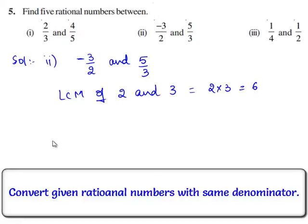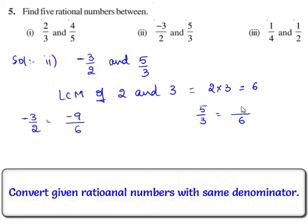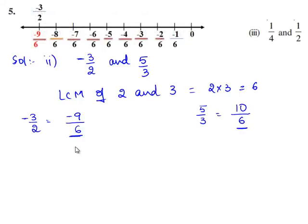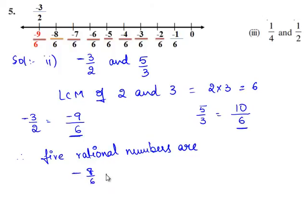Therefore, we shall express each of the rational numbers with the denominator as the LCM. Therefore, minus 3 by 2 is written as with 6 as the denominator: 2 times 3 is 6 and minus 3 times 3 is minus 9. And also, 5 by 3 is written as with 6 as the denominator: 3 times 2 is 6 and 5 times 2 is 10. Therefore, we have minus 9 by 6 and 10 by 6. Now, we shall write 5 rational numbers between minus 9 by 6 and 10 by 6. The 5 rational numbers are: minus 8 by 6, minus 7 by 6, minus 2 by 6, 0 by 6, and 5 by 6.